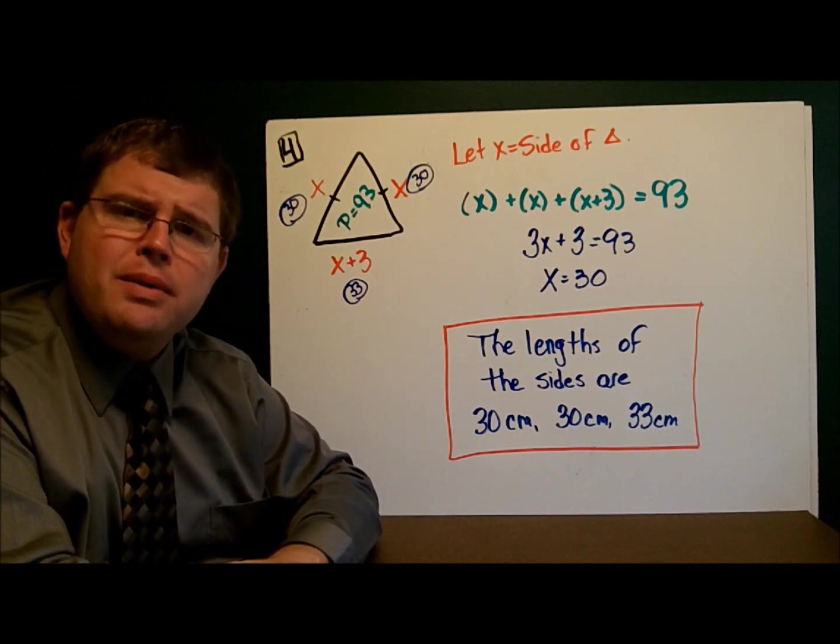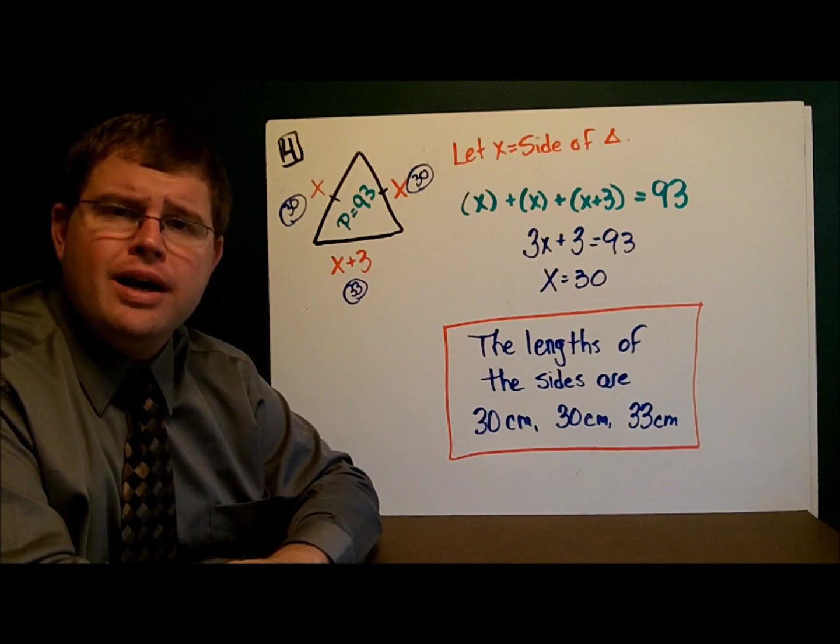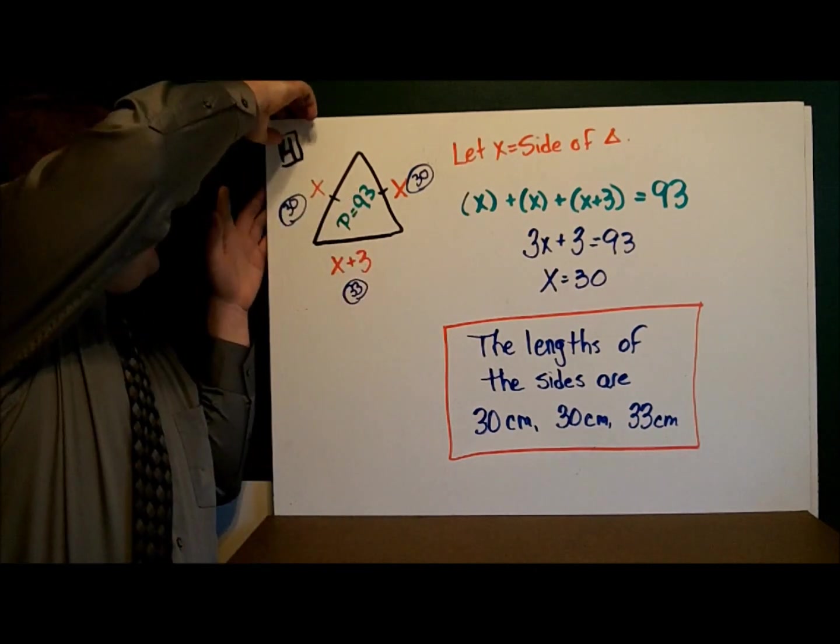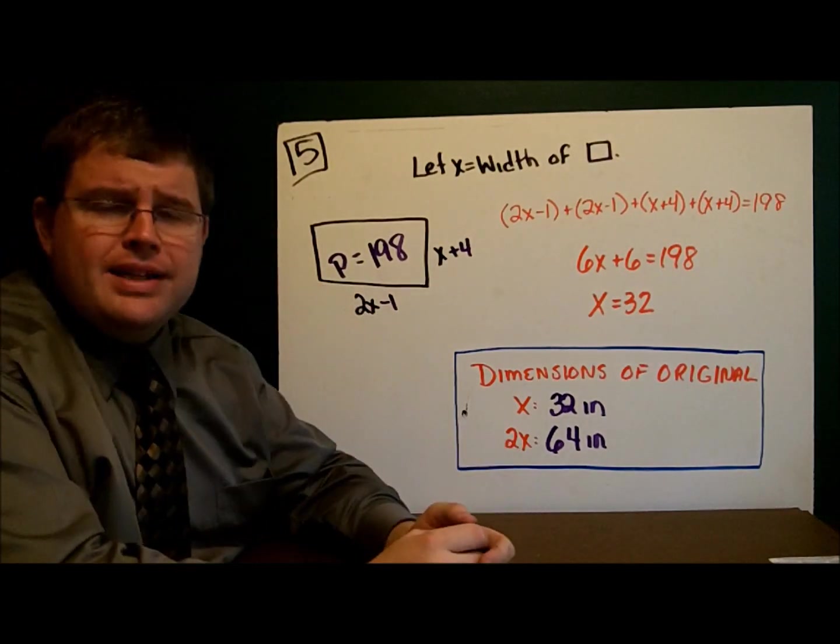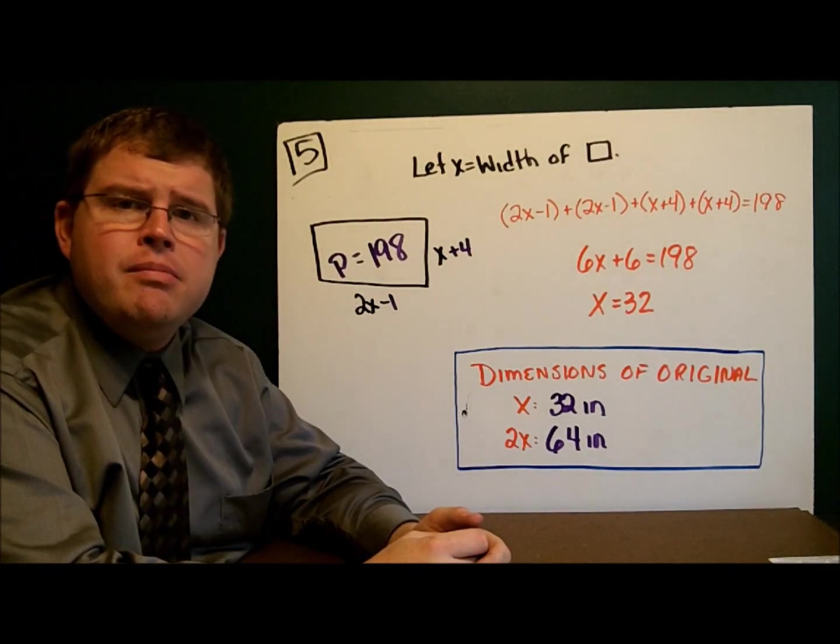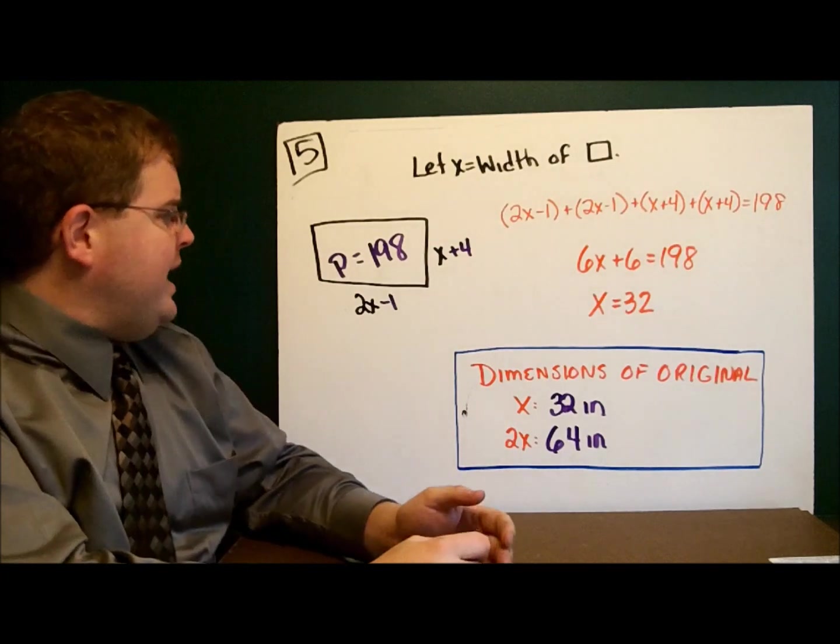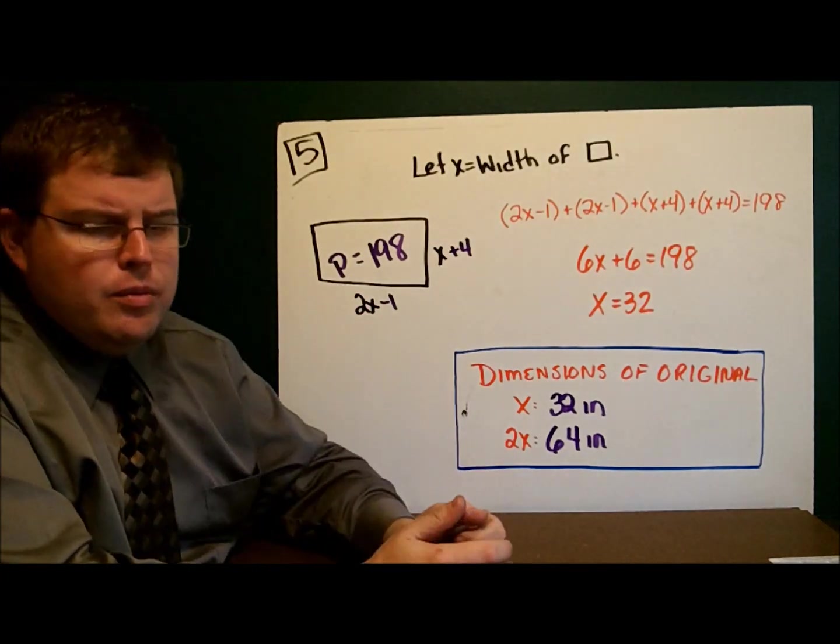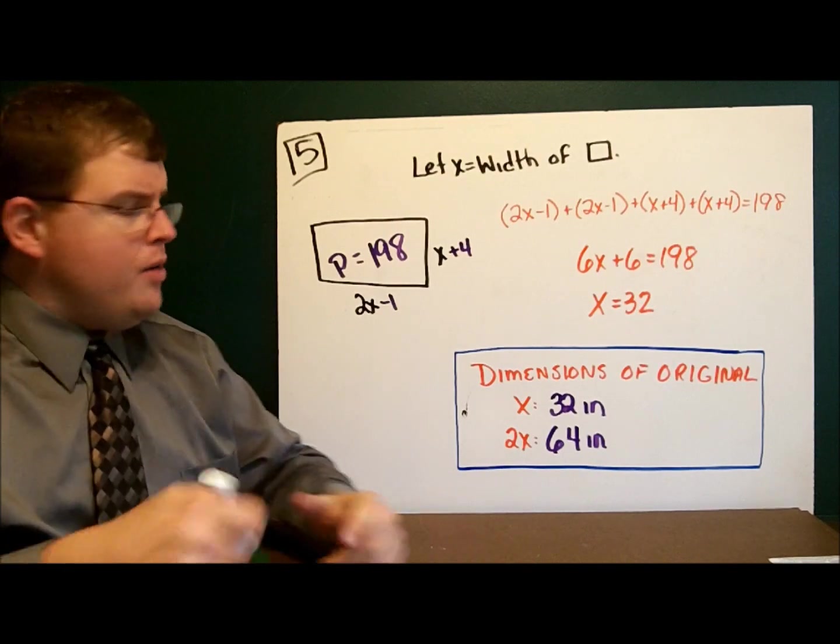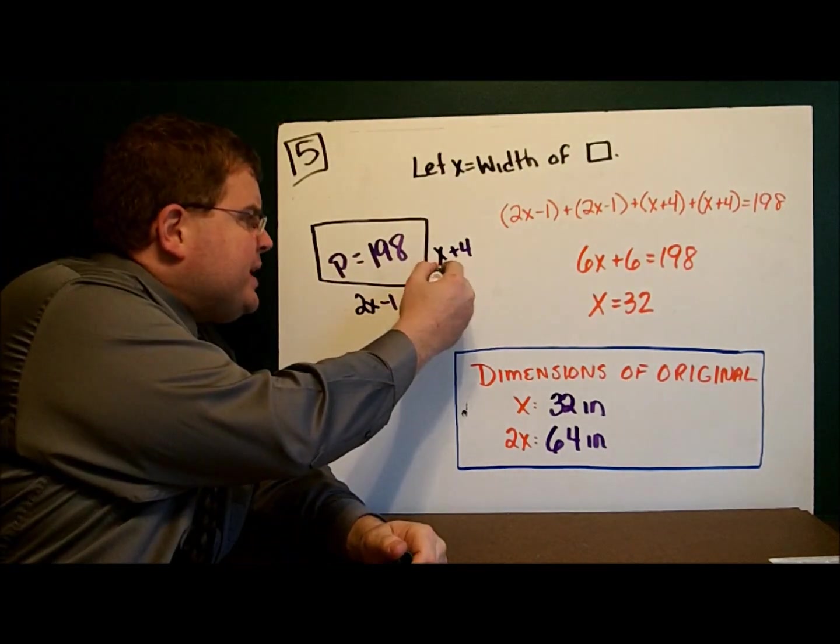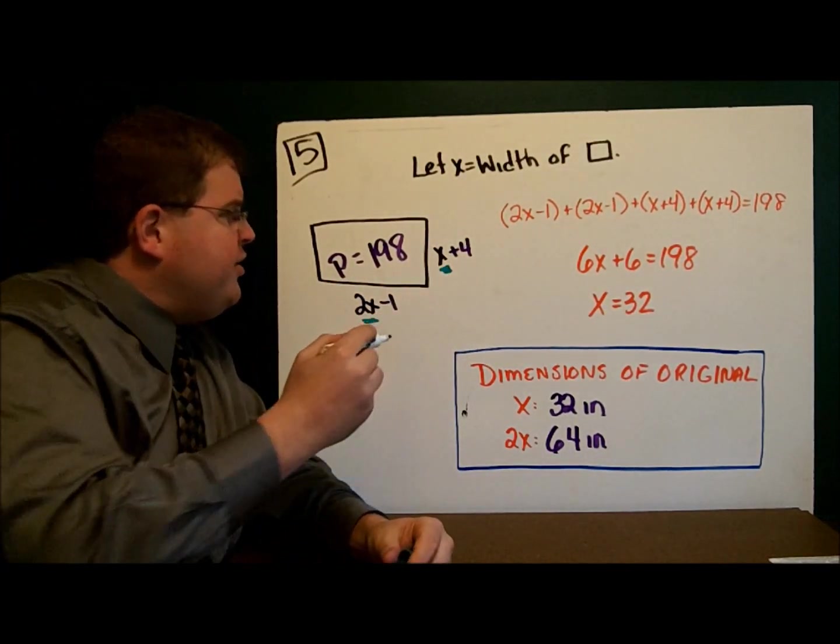Example 5 is a little bit trickier. There's some different stuff going on. Let's take a look at that one. On example 5, we're dealing with a rectangle that we're changing. Originally we had a rectangle and the length was two times the width. And so originally we just simply had x and 2x.